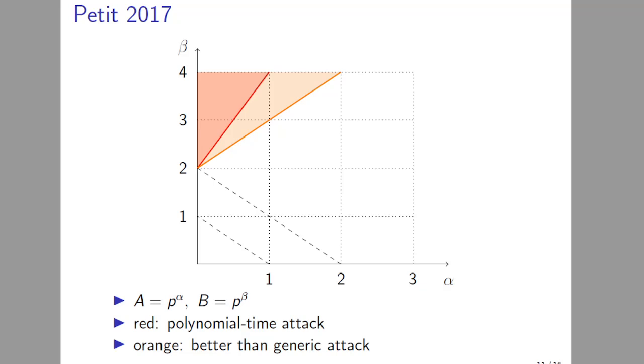Let me show two graphs which show the evolution of torsion point attacks throughout the years. The first is the 2017 attack by Petit. In this graph, you have two axes, an axis α and axis β, where A is roughly p^α and B is roughly p^β. Now you want conditions on α and β when you have improved attacks. In this graph, the red line and above symbolizes polynomial-time attacks, and the orange line and above symbolizes better-than-generic attacks. As you can see, the original attack didn't affect any SIDH or B-SIDH-like parameter choices. The dotted line connecting the two 1s corresponds to SIDH-like parameter choices, and the dotted line connecting the two 2s corresponds to B-SIDH-like parameter choices.